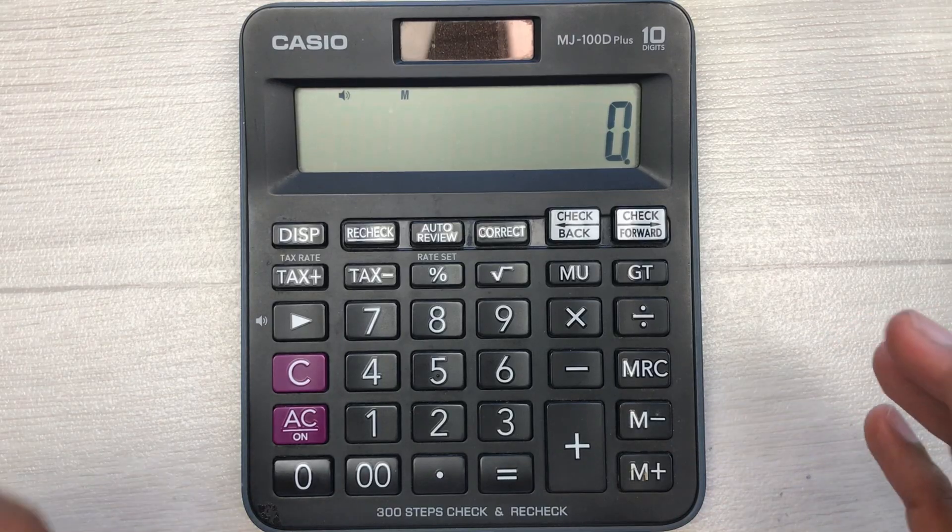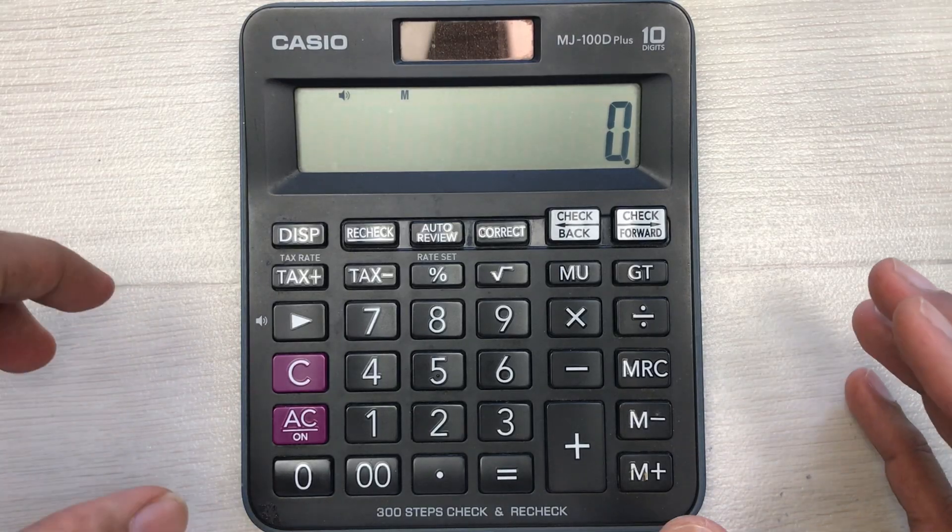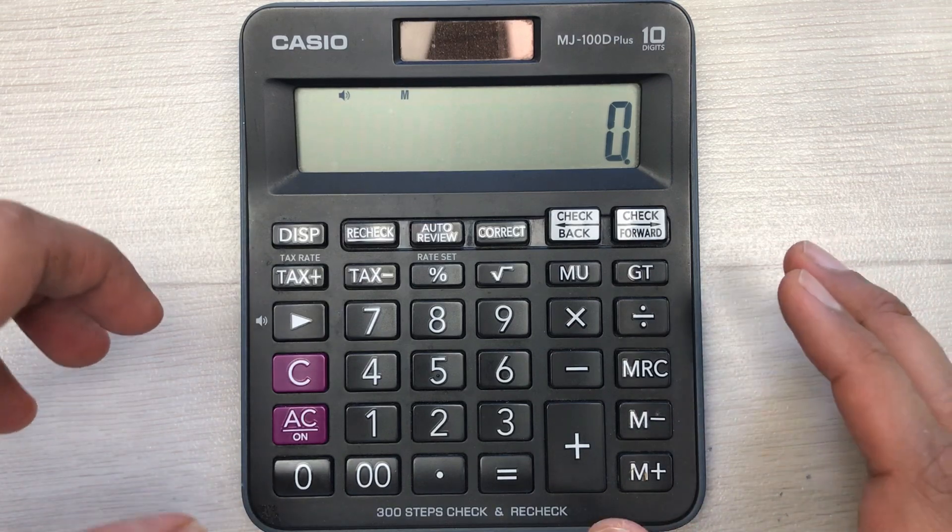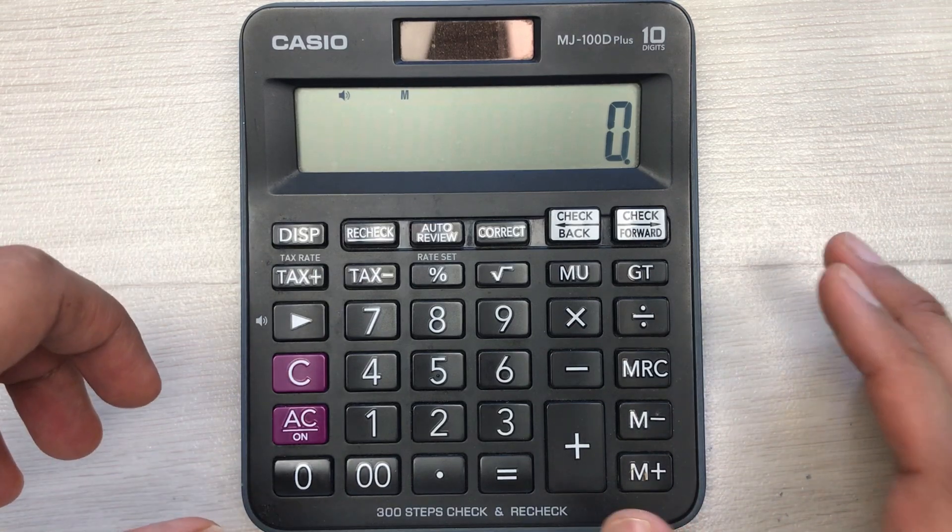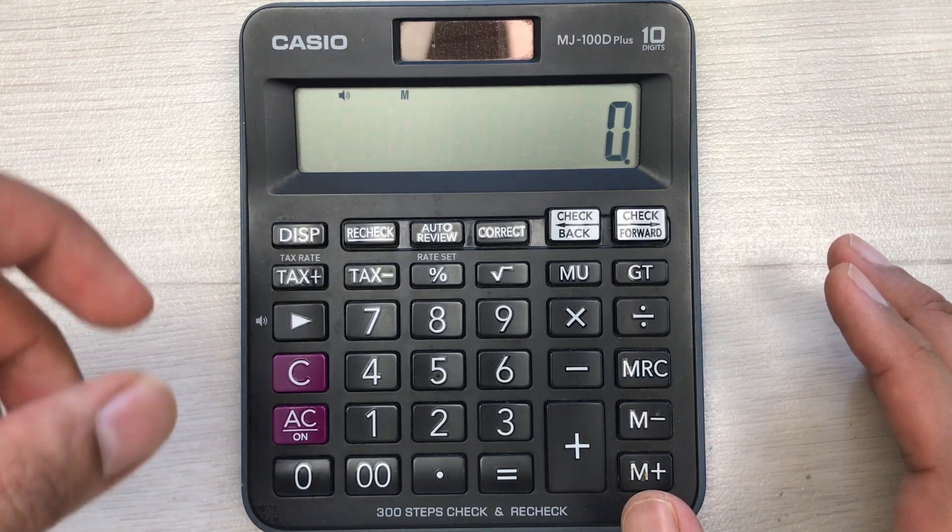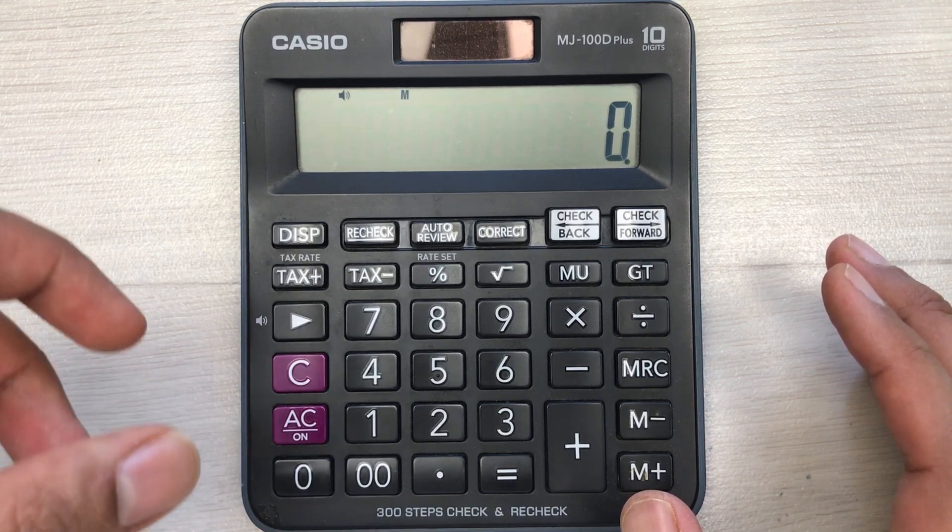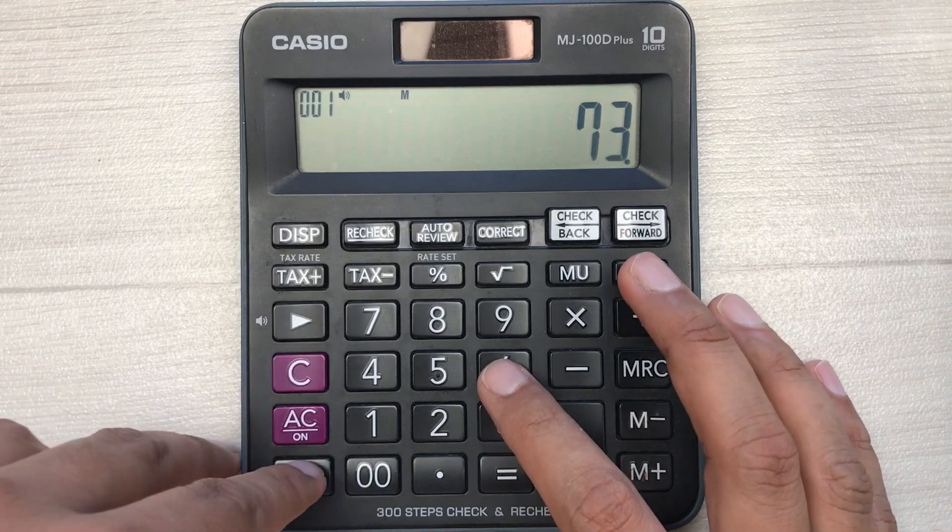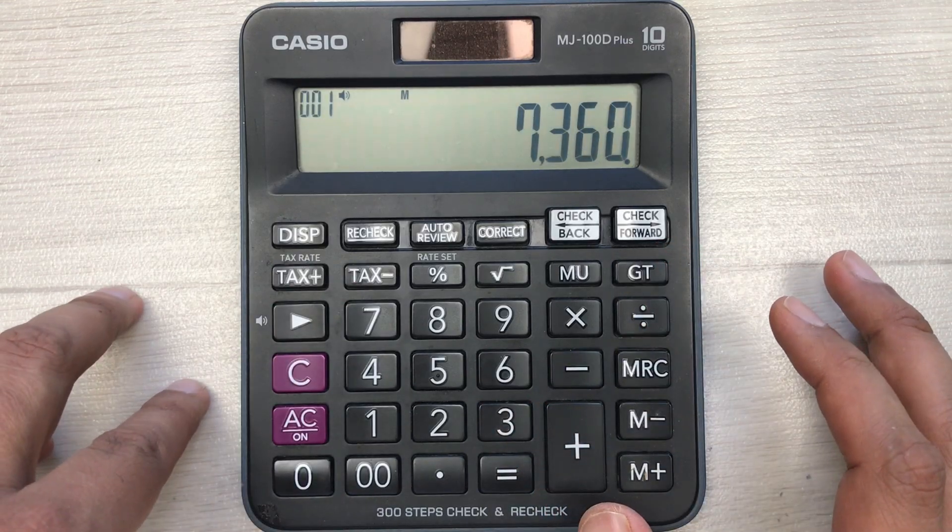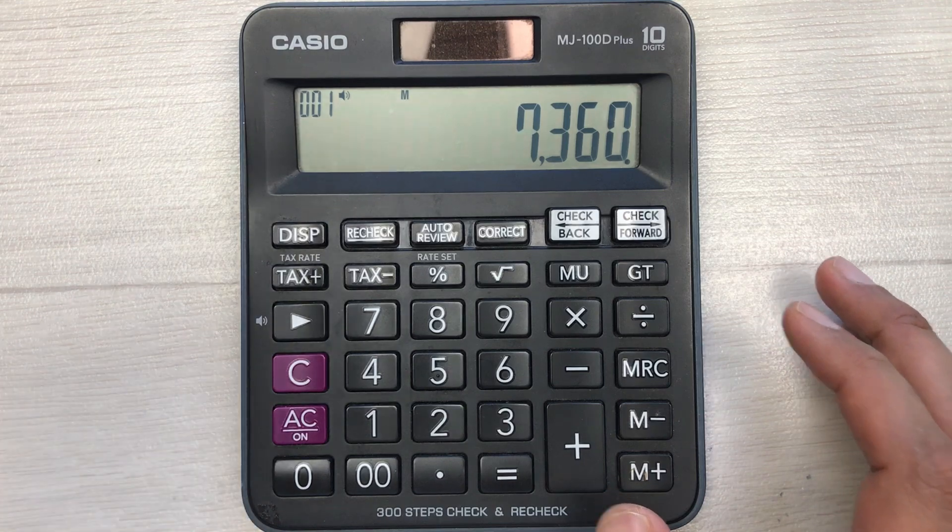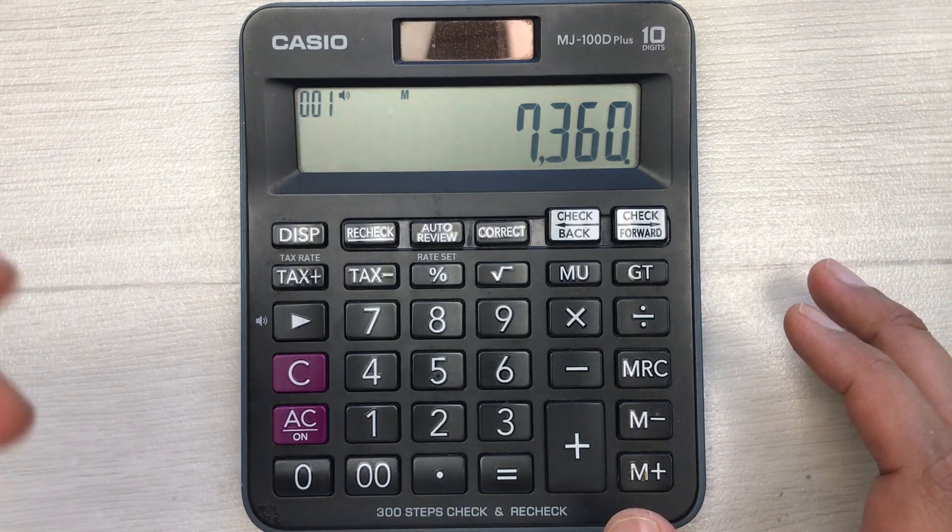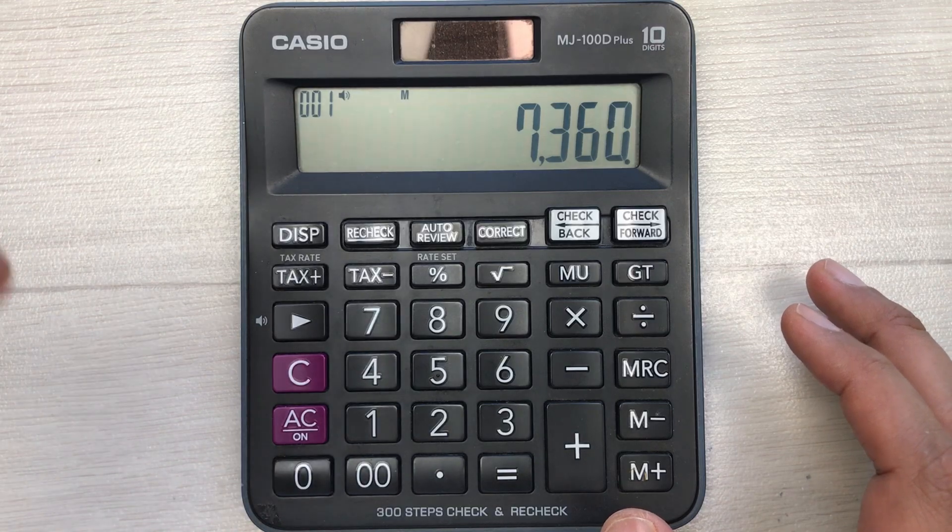Hello guys, I hope you are doing really well. In today's video, I am going to show you how to calculate 50% discount on your calculator. For example, you have a pair of shoes and the price of those shoes is $73.60, and you get a discount of 50%.